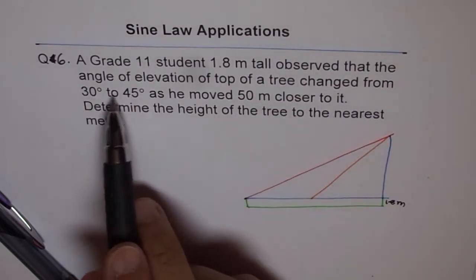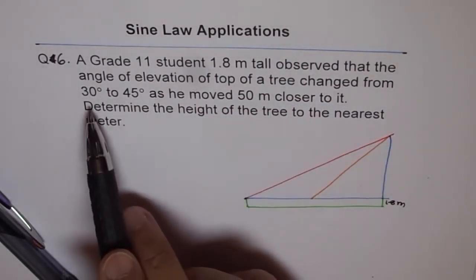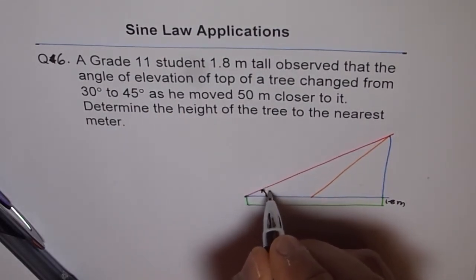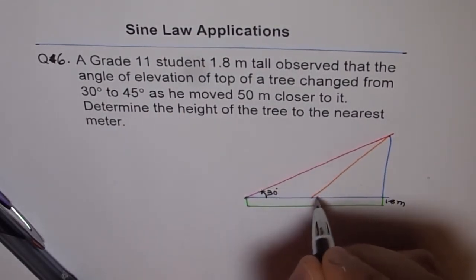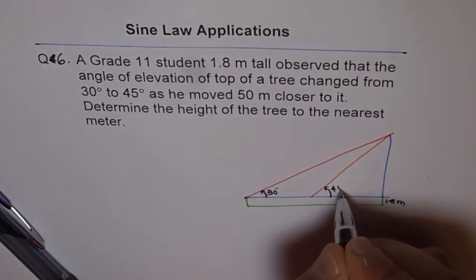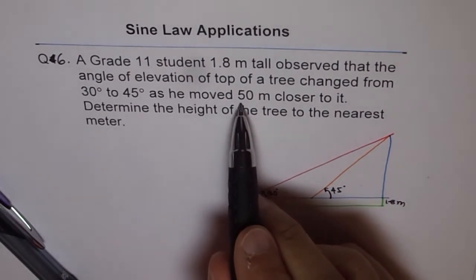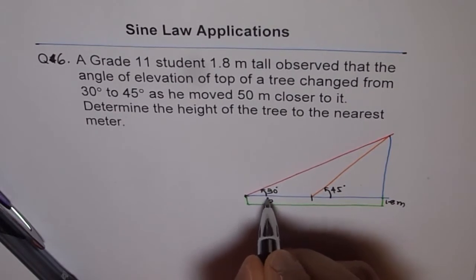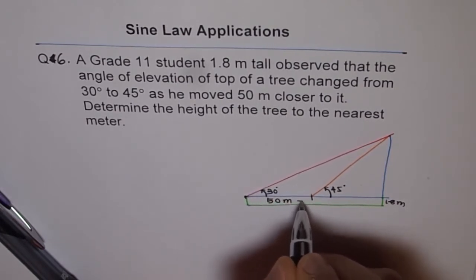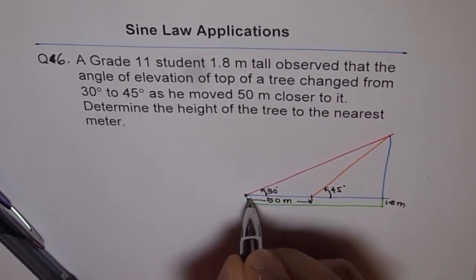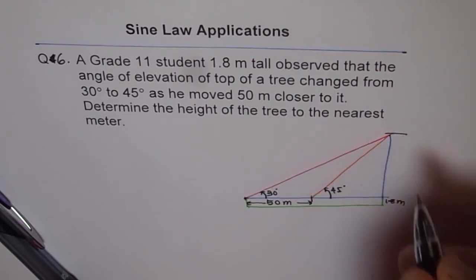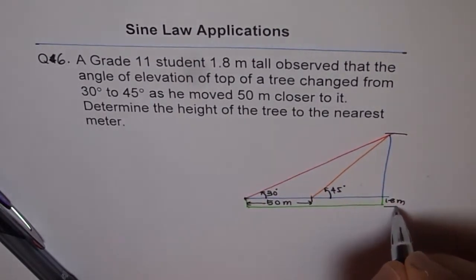Observe that the angle of elevation to the top of the tree changed from 30 to 45. So initially it was lower at 30 degrees and as you went closer it increased to 45 degrees, and you went closer by 50 meters. So that distance from here to here is 50 meters. And determine the height of the tree. That means you need to find this height from the bottom.